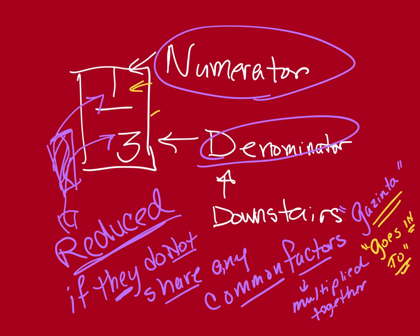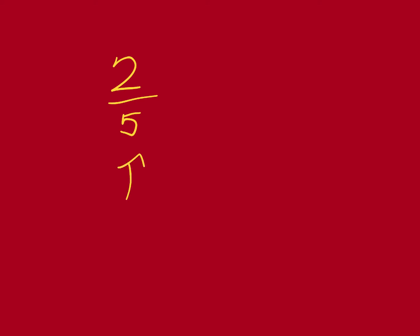So, are there any numbers that go into one and three? No, the answer is no. Well, one goes into one and goes into three, but that doesn't help us because one and three would stay the same. So, two-fifths — that is already reduced because there is not a number that goes into both two and five. They do not share a gazinta, so that is reduced.